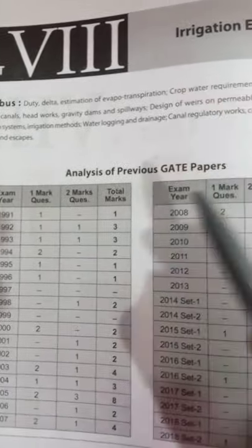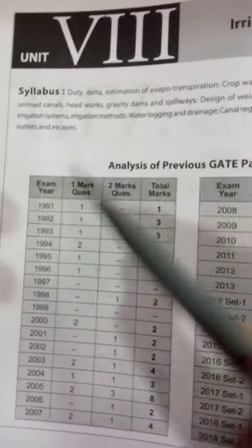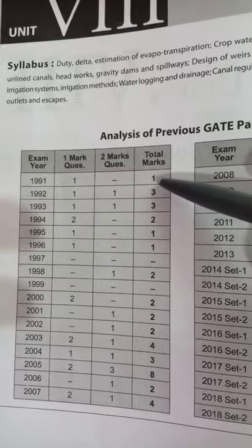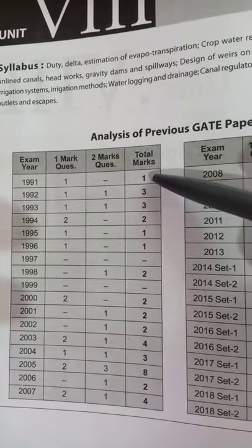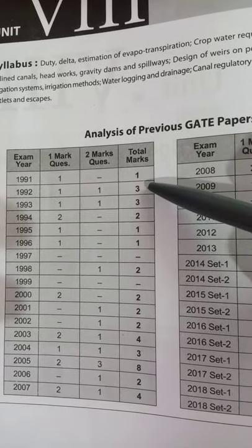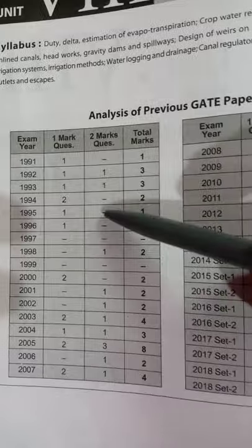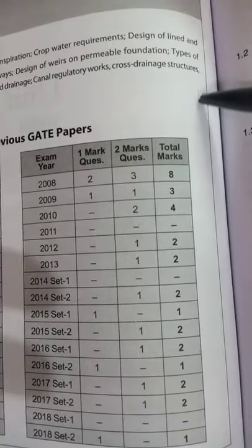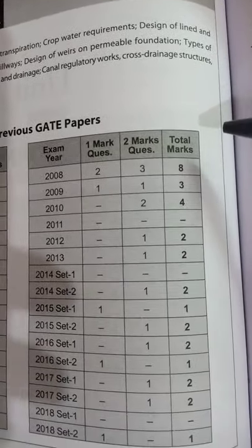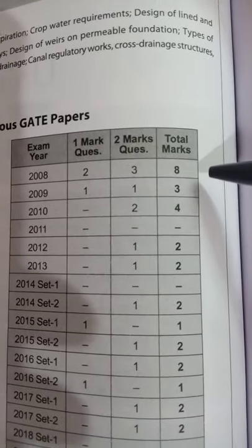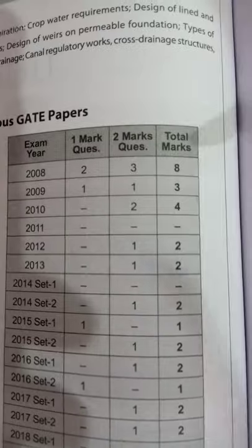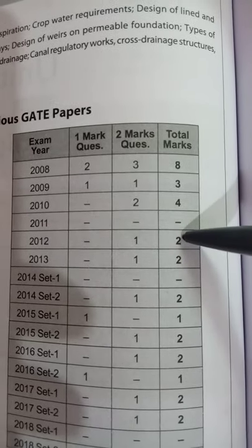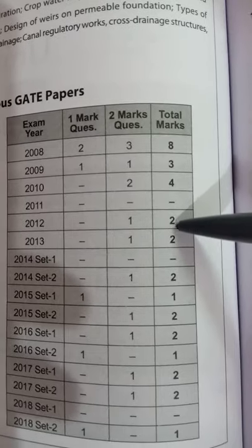I will explain the analysis of previous year questions from 1991 to 2018. In 1991, a 1-mark question was asked. In 1992 and 1993, theory questions. In 2008, an 8-mark question. 2009 had 3 marks. 2010 had 4 marks. 2012 only 2 marks. In 2014...